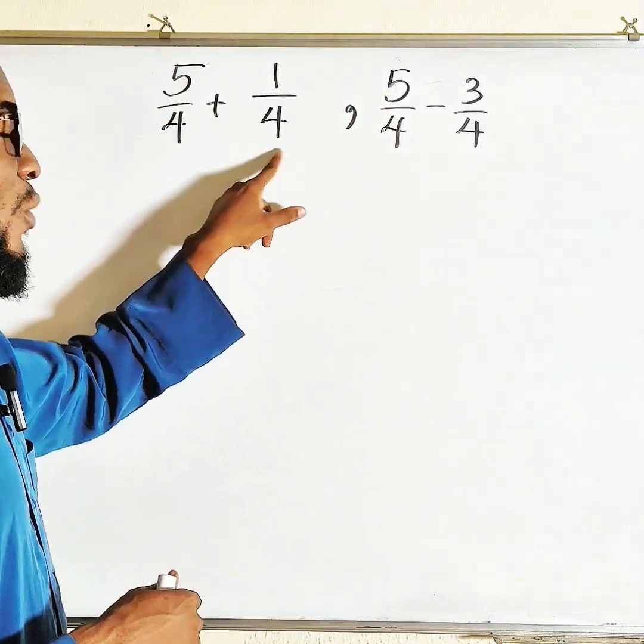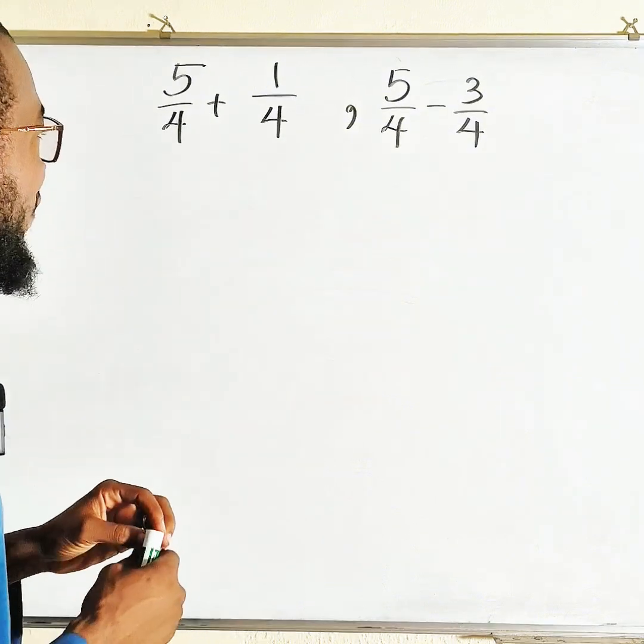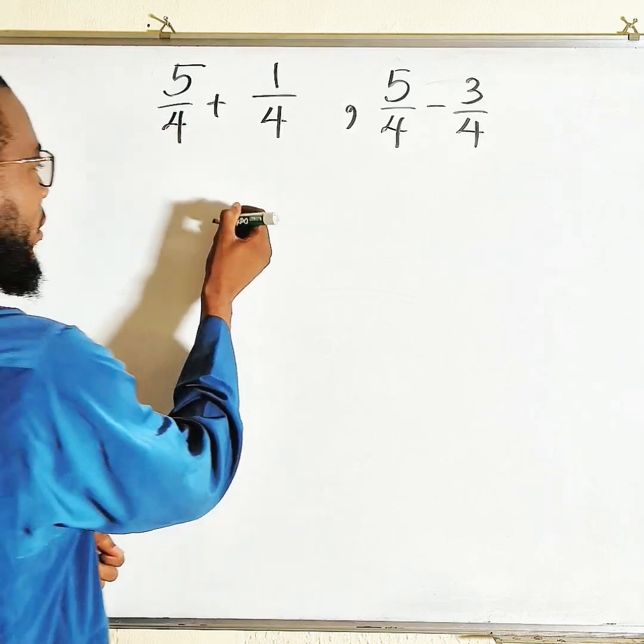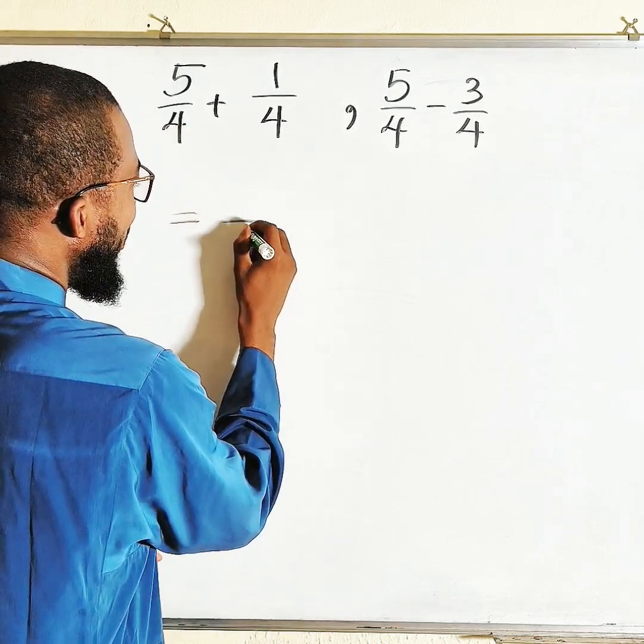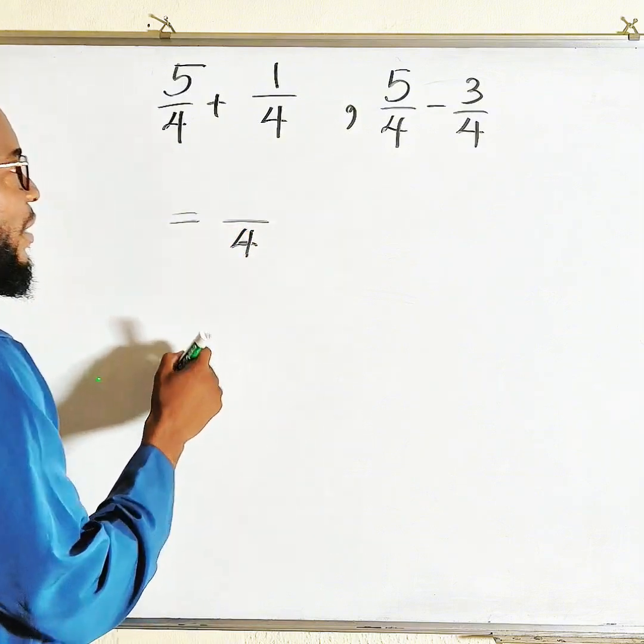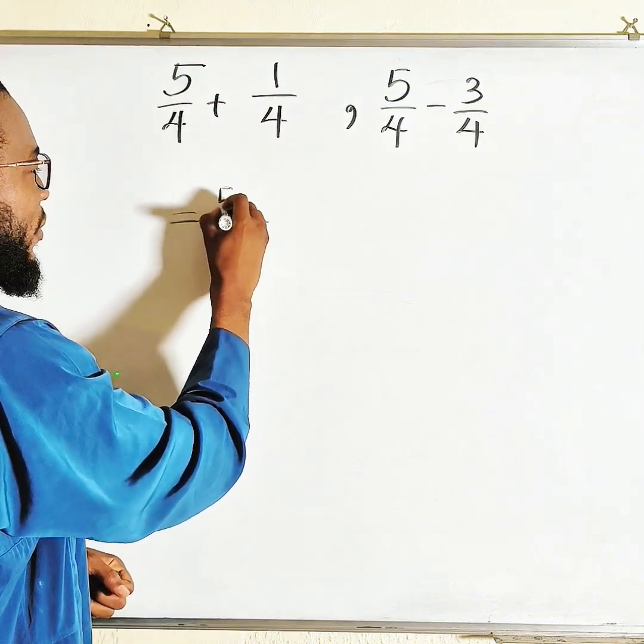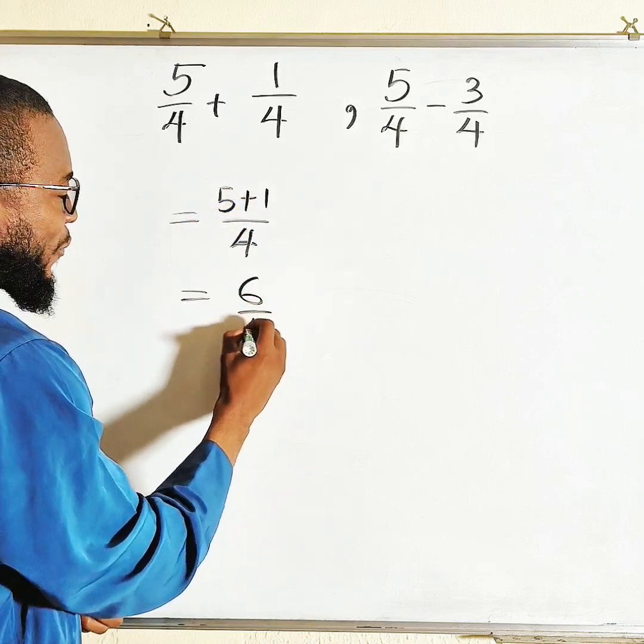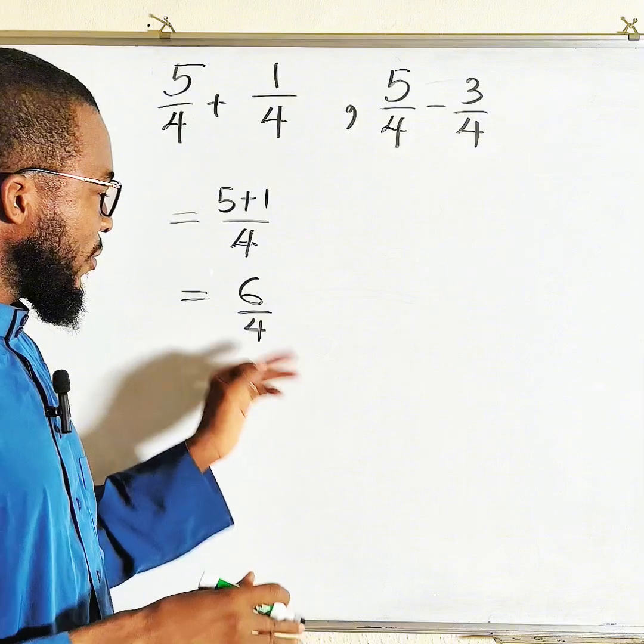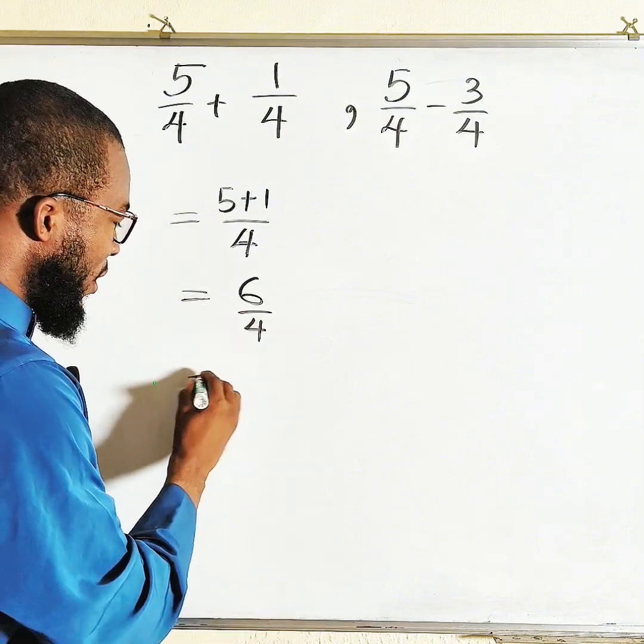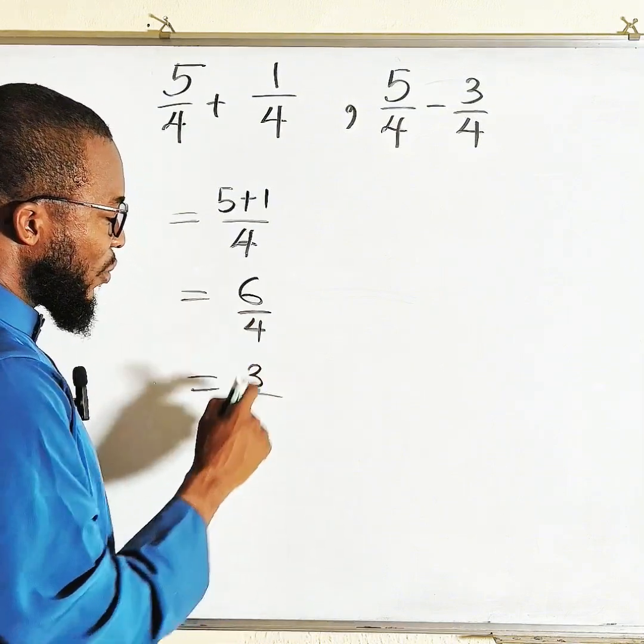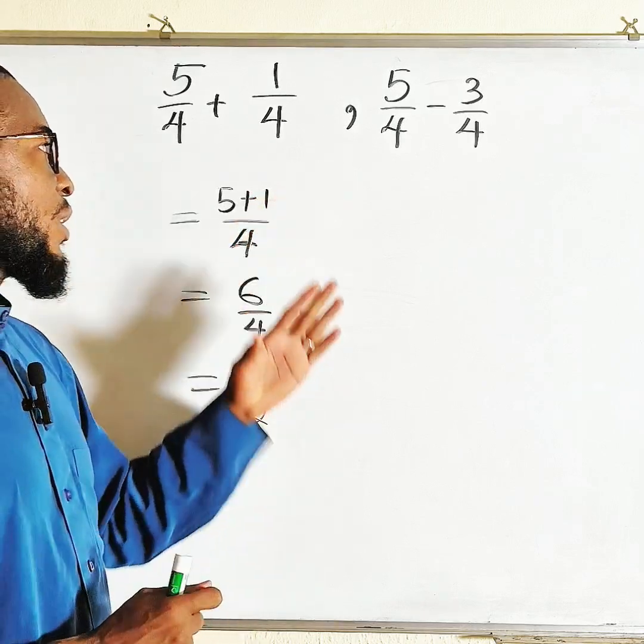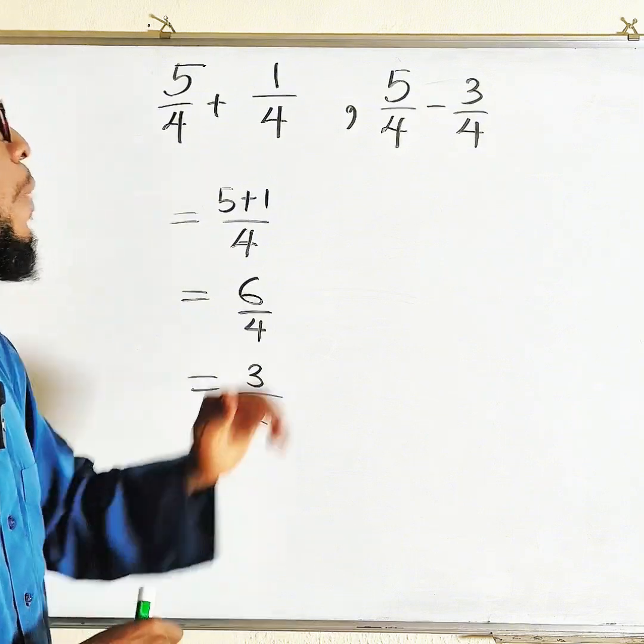Whenever the denominators are the same, always pick a single denominator. Let me start with addition. This will be the denominator, a single denominator. Here is four. Then you add the numerators: five plus one is six divided by four. If it is reducible, reduce it. Two can go into six exactly three times, two can go into four exactly two times. Therefore, 5/4 plus 1/4 is equal to 3/2.